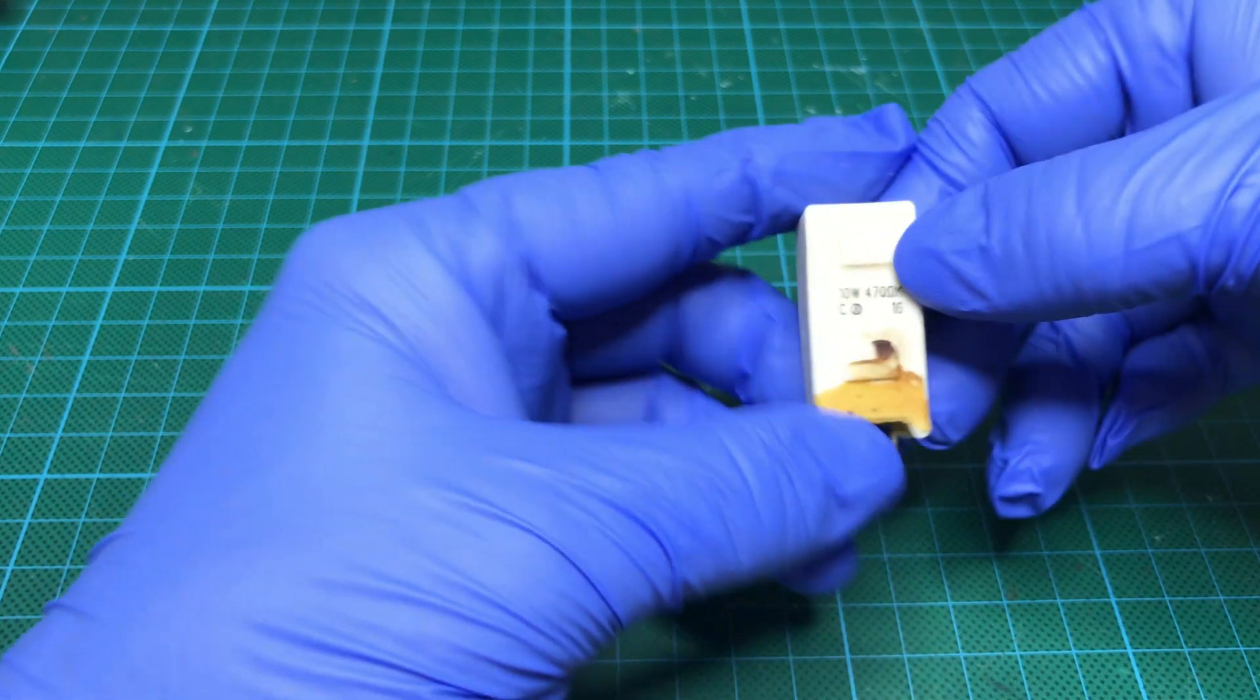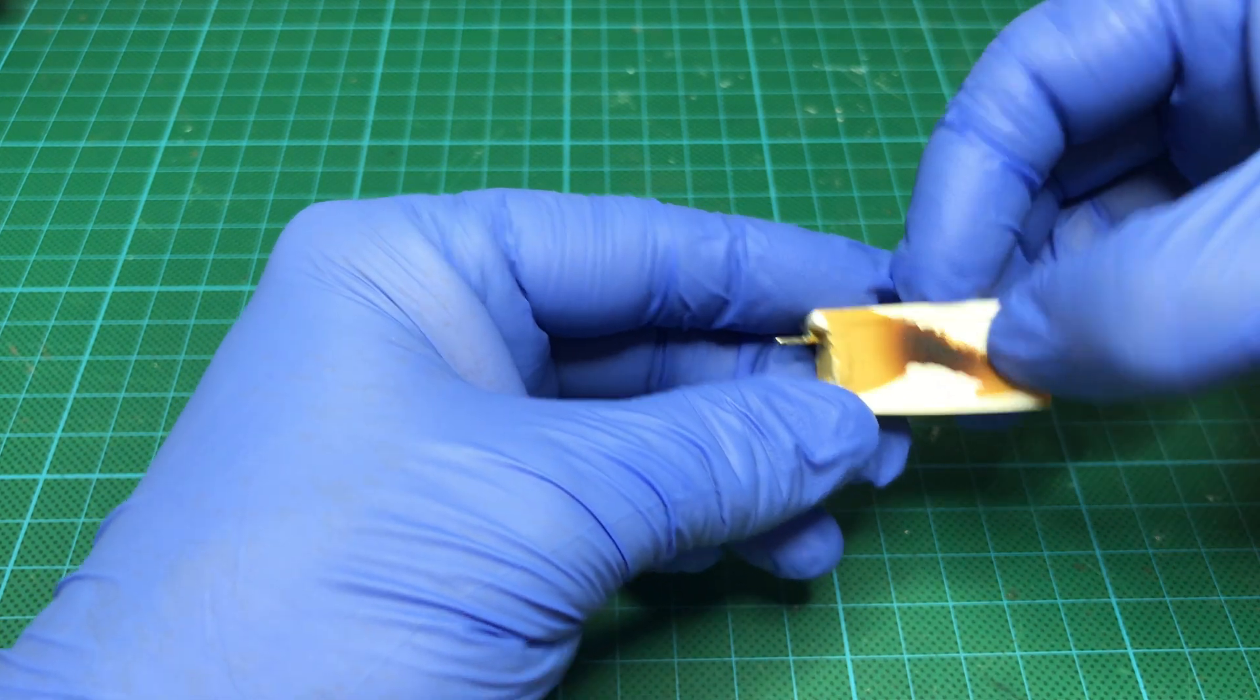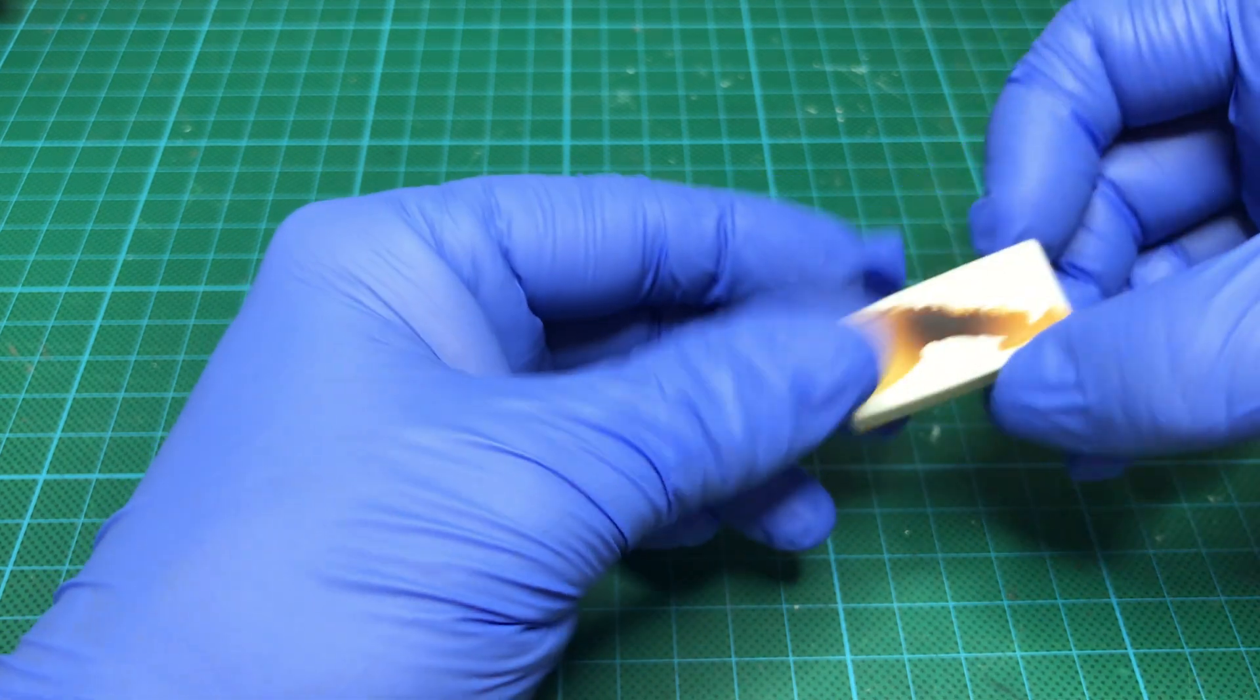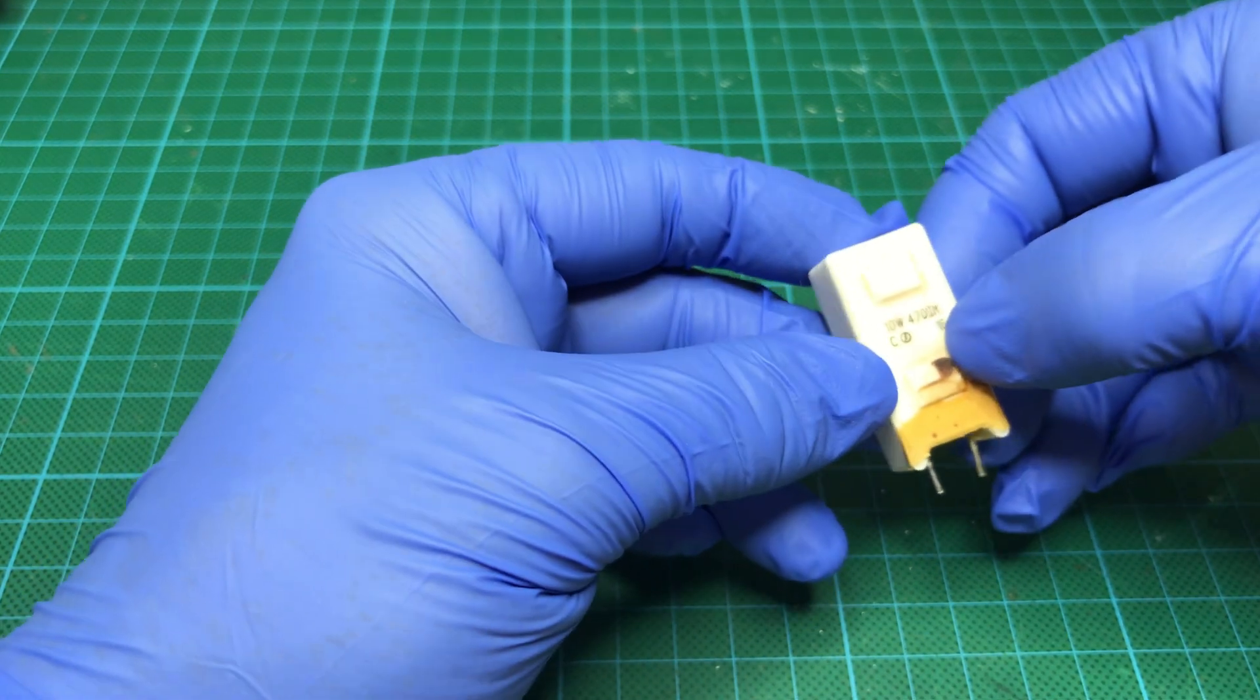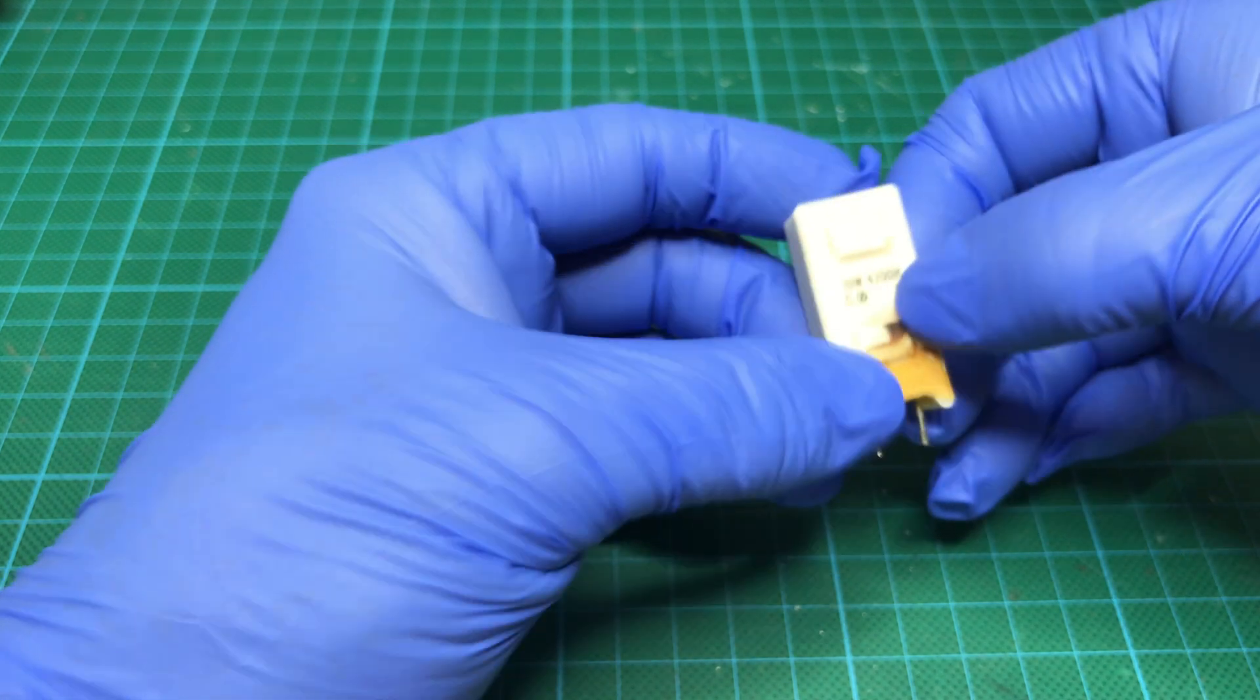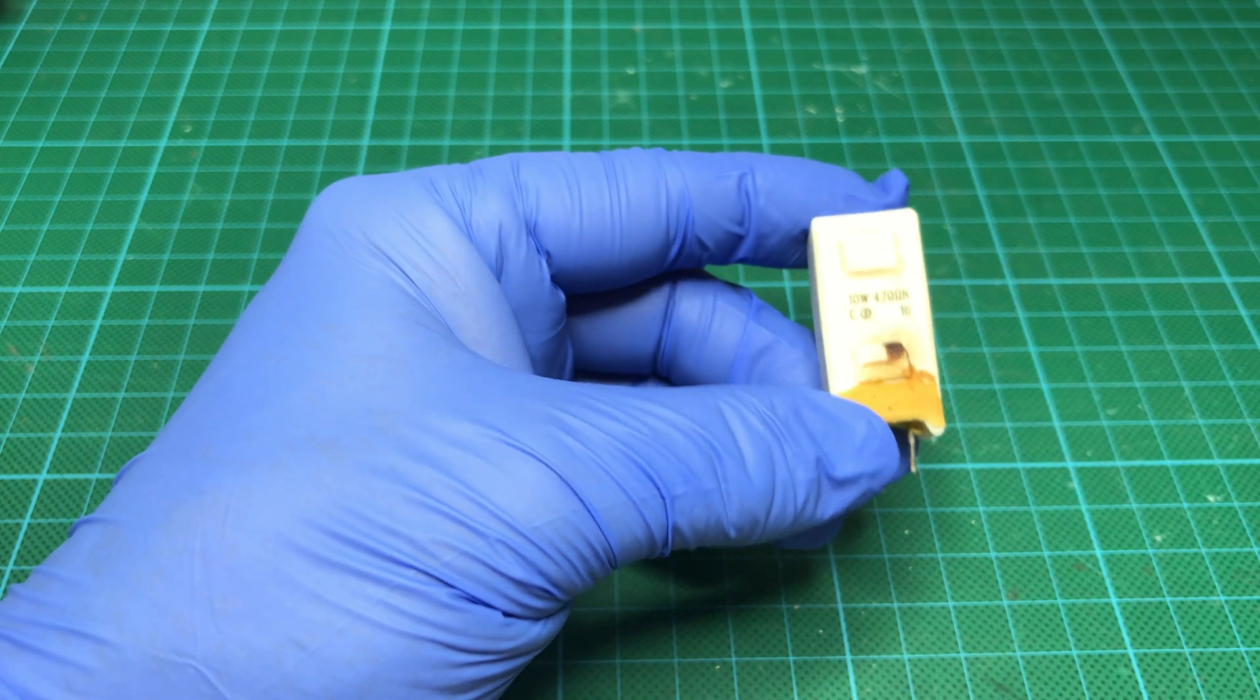What I would like to do is break this one apart. As you can see, it does have a burning mark on the glue that was on it. I want to break it apart in order to confirm that it is a 470 ohm and not something crazy like 470k, which would be very unusual for a 10 watt resistor.